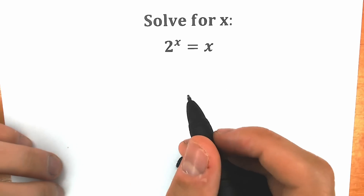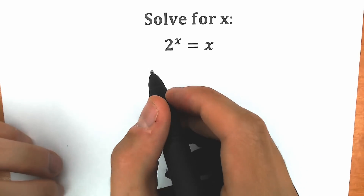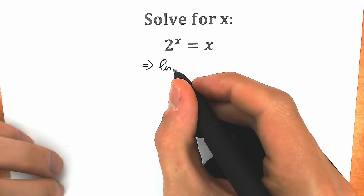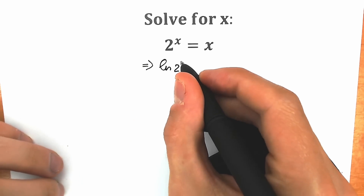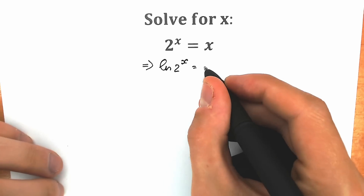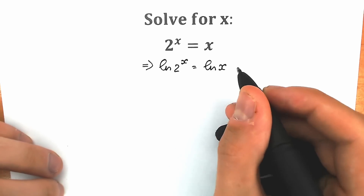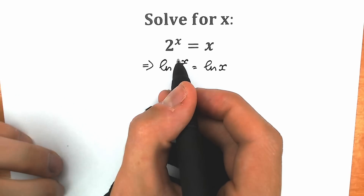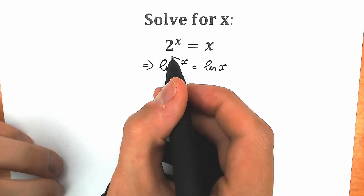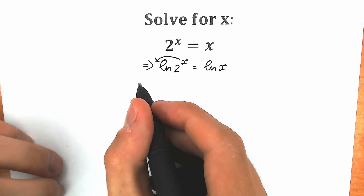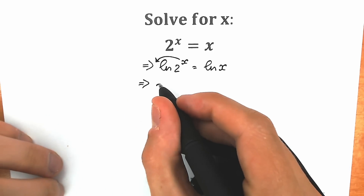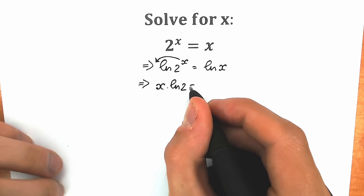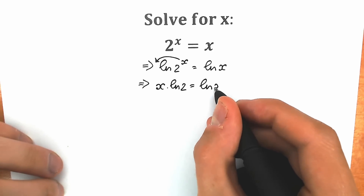First of all, let's apply the natural log on both sides. So on the left side, we have natural log of 2 to the x, equal to natural log of x. And why do we apply natural log on both sides? Because by the main log property, this x will come down. So as a result, we will have x times natural log 2 equal to natural log x.